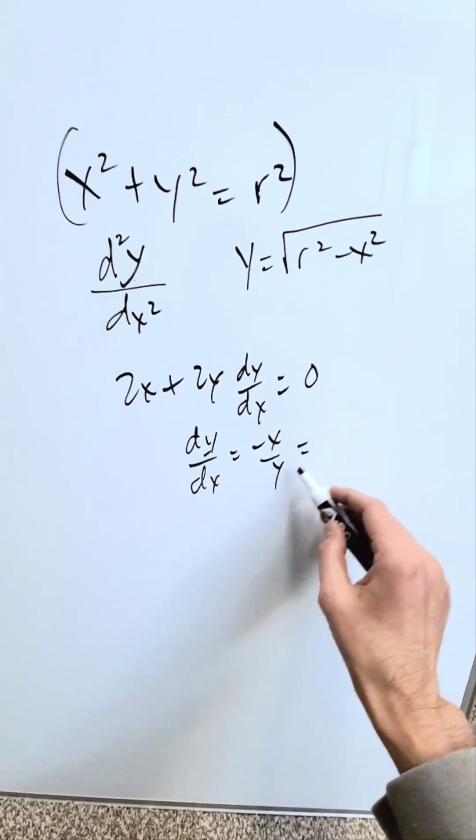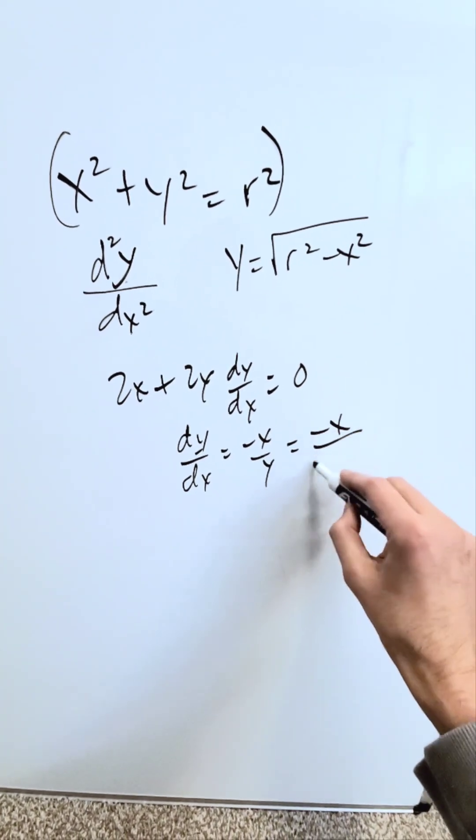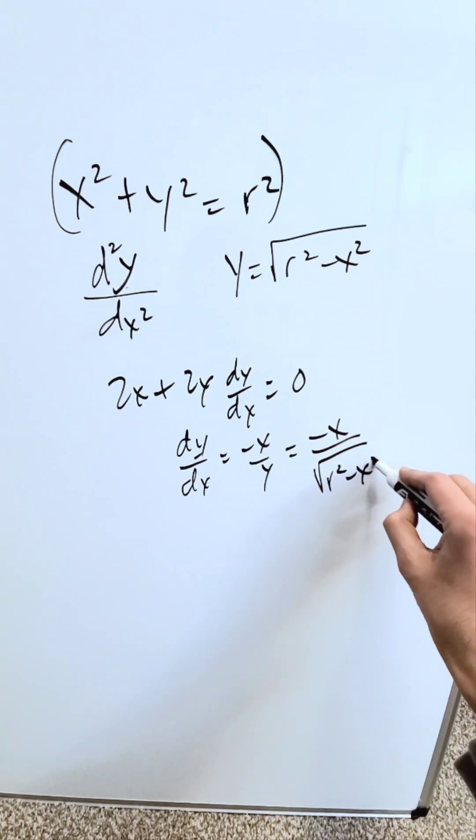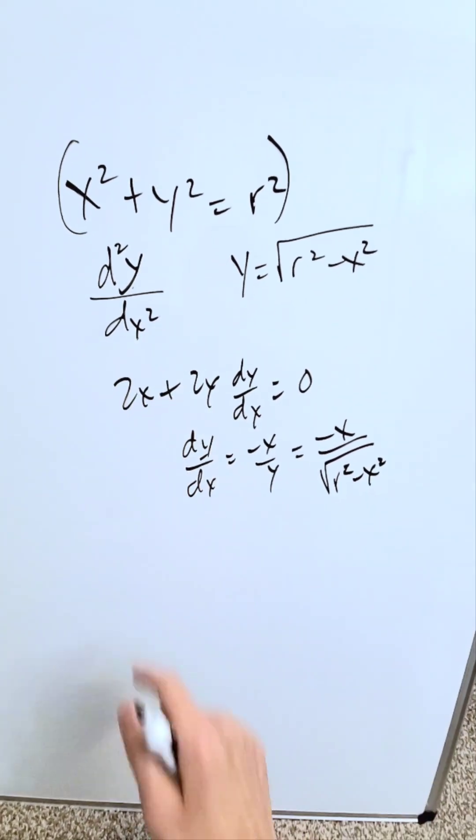This represents your first order derivative. You can resubstitute y as minus x over the square root of r squared minus x squared. But we are interested in the second order.